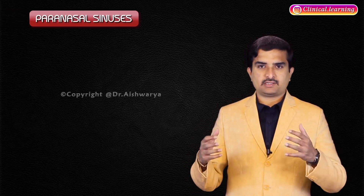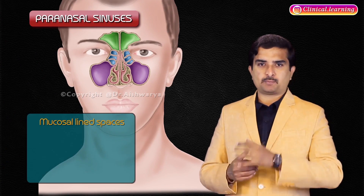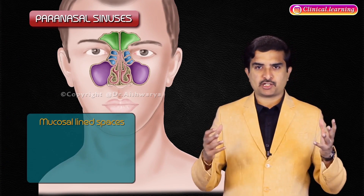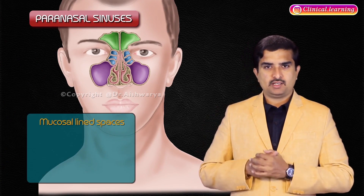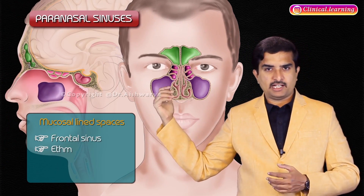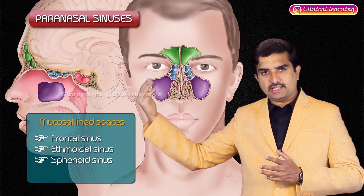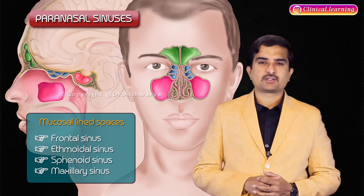Next is the upper airway structure: the paranasal sinuses. The paranasal sinuses are composed of four mucosal-lined spaces found within their respective bones. They are the frontal sinus, the ethmoidal sinus, the sphenoidal sinus, and on either side, the maxillary sinus.